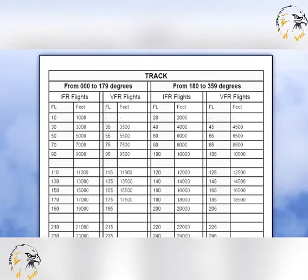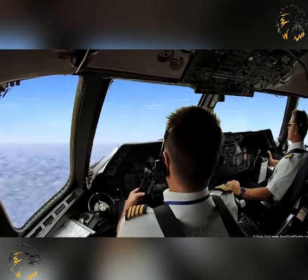aircraft flying at specified flight levels depending on their magnetic track over the ground. You should note that whereas all flights which take place in instrument meteorological conditions must be conducted in accordance with the instrument flight rules, flight under the instrument flight rules may also take place in visual meteorological conditions.